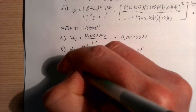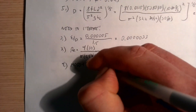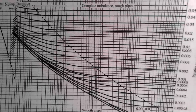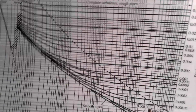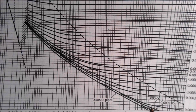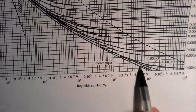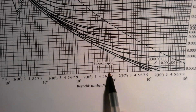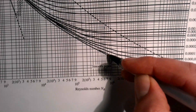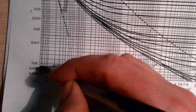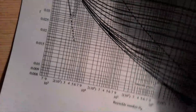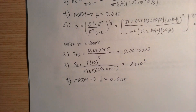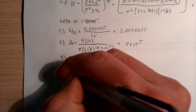With these new values we return to the Moody chart. For e/D ≈ 0.0000033 and Re = 8×10⁵, the point falls just above the smooth-pipe line. Reading the chart carefully, the friction factor is approximately f ≈ 0.0125.